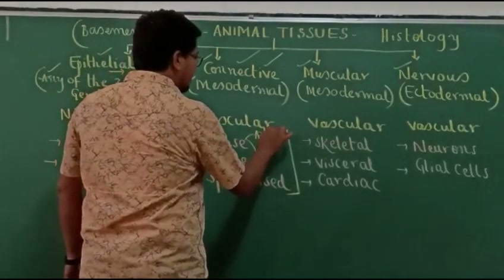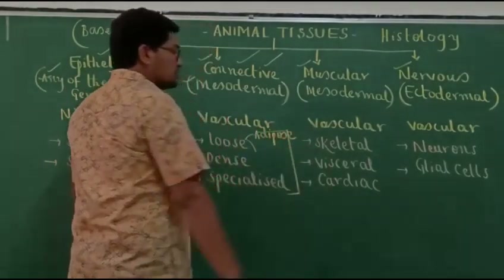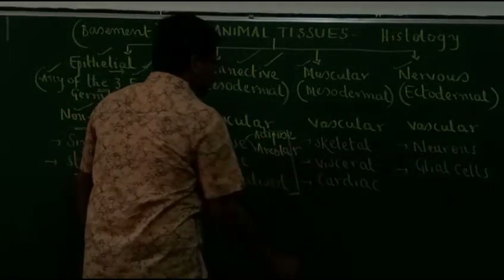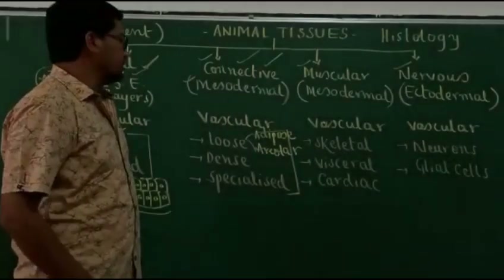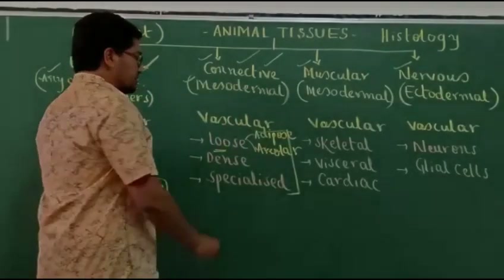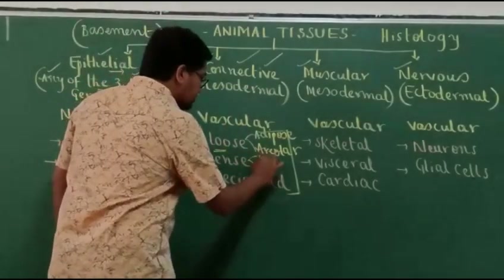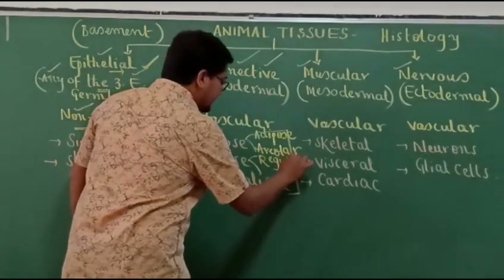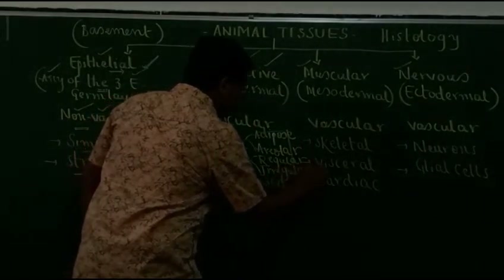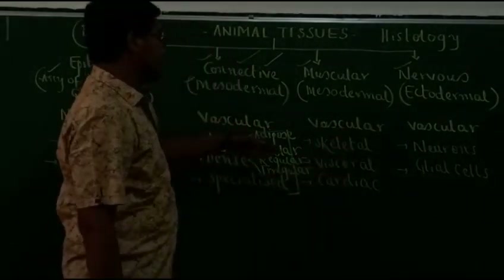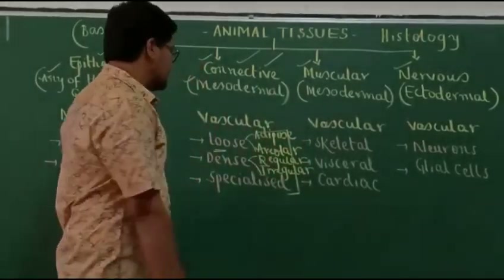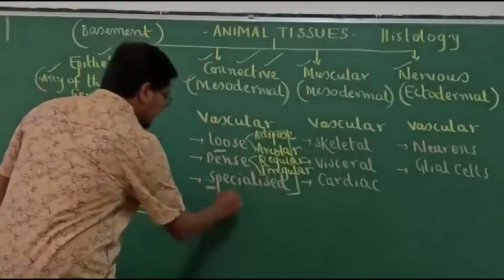For loose connective tissue, two examples to remember: adipose tissue, which is the fat-storing tissue, and areolar connective tissue. For dense connective tissue, they are further classified into dense regular and dense irregular.